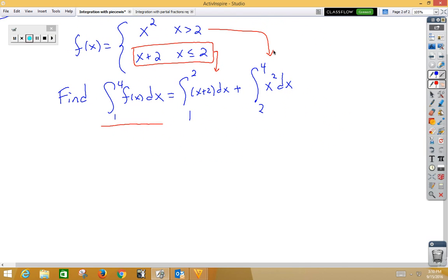If we integrate the left side, we get x squared over 2 plus 2x from 1 to 2. That gives us, if we plug in 2, we get 2 plus 4. Plug in 1, we get 1 half plus 2. So I've got 6 minus 2 and a half, which ends up being 7 halves.